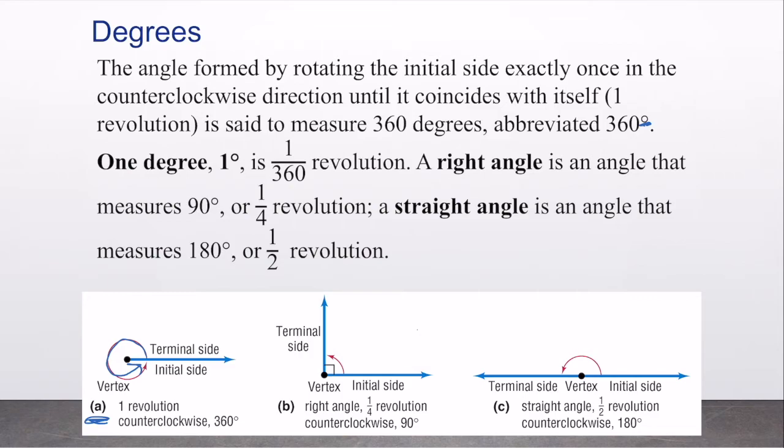A right angle is an angle that measures 90 degrees or 1/4 of a revolution, and a straight angle, that's just going to form a straight line, is an angle that measures 180 degrees or 1/2 of a revolution.